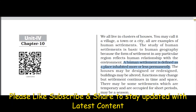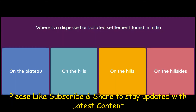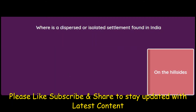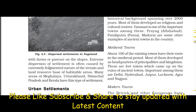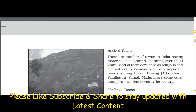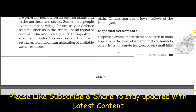Where are dispersed or isolated settlements found in India? On the plateau, on the hills, or on the hillsides? The answer is on the hillsides. According to the book, these settlements are found in Meghalaya, Uttarakhand, Himachal Pradesh, and Kerala, as these are hillside regions.